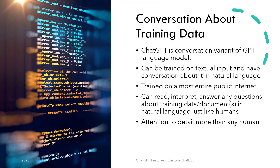ChatGPT is called ChatGPT for a reason. It's a conversation variant of a large language model called GPT. ChatGPT has the core ability as a chatbot to ingest textual input like articles, documents, books, etc. as its training data and then be able to have a conversation about the contents of these inputs — meaning it can answer any questions about them in natural language.